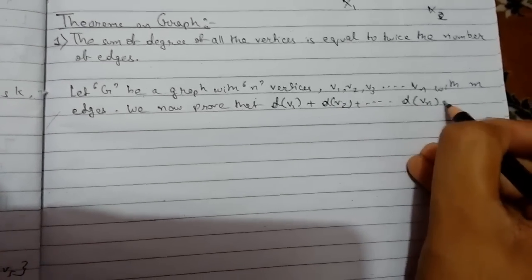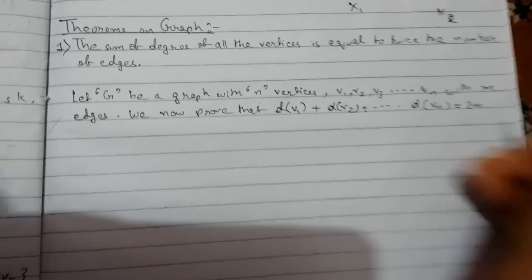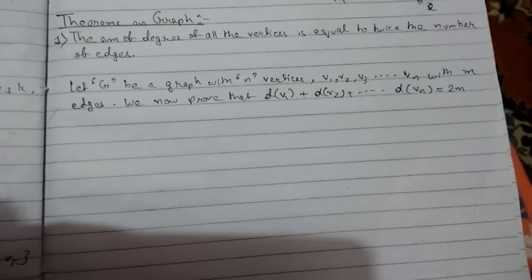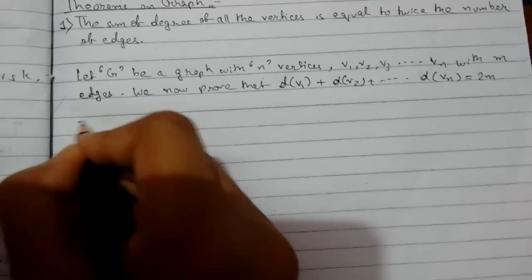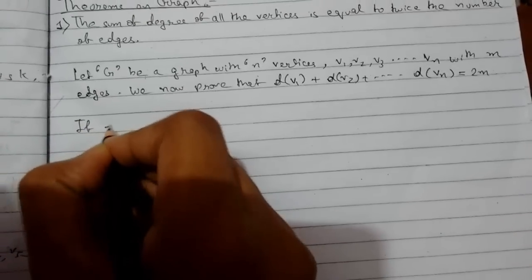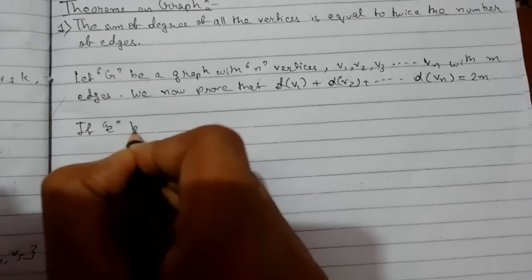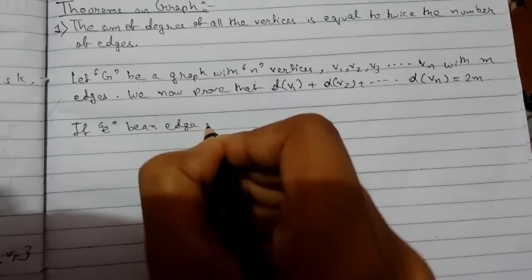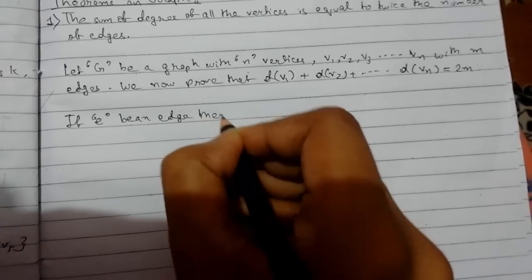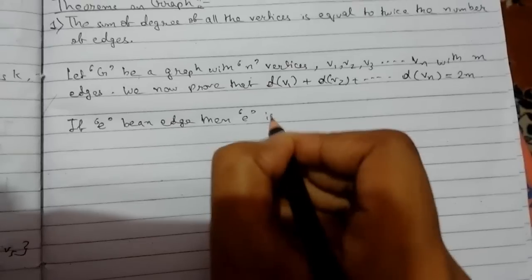So if e be an edge, then e is either a loop or incident with two distinct vertices.